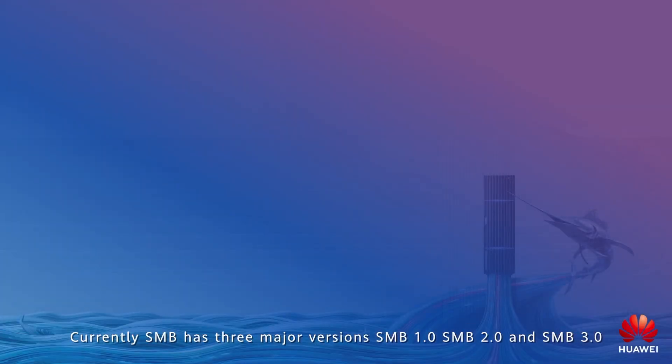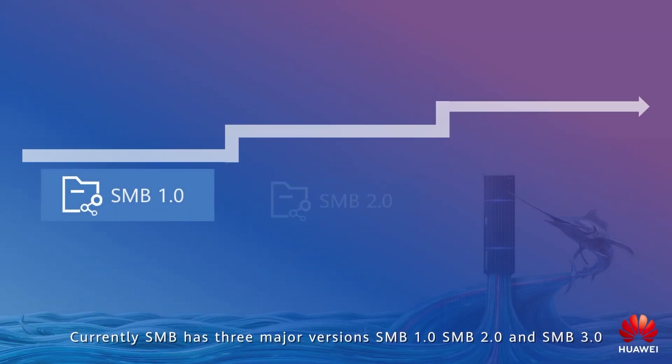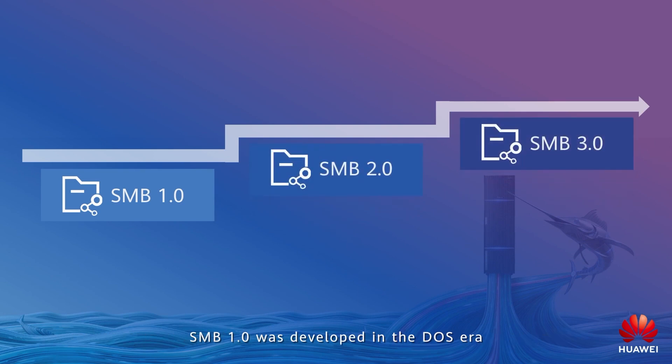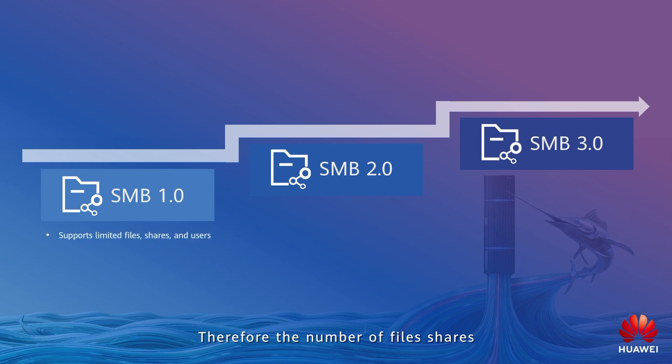Currently, SMB has three major versions: SMB 1.0, SMB 2.0, and SMB 3.0. SMB 1.0 was developed in the DOS era. The then LAN speed was less than 10 Mbps. Therefore, the numbers of files, shares, and users supported by SMB 1.0 were limited.